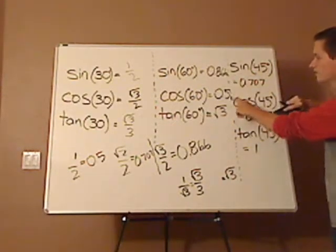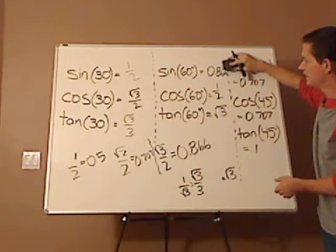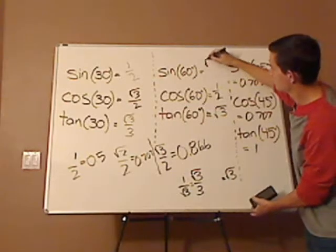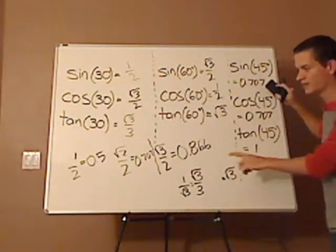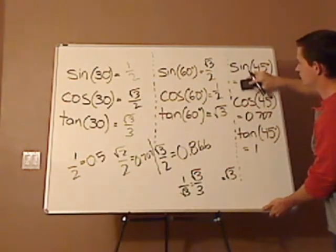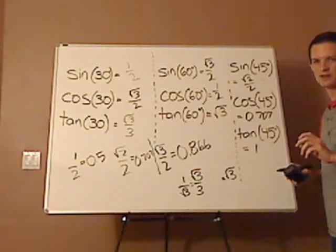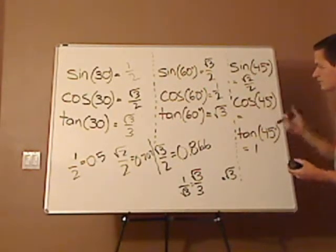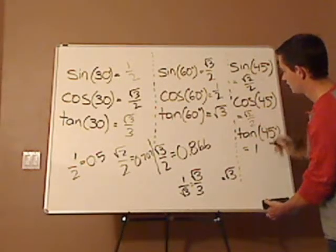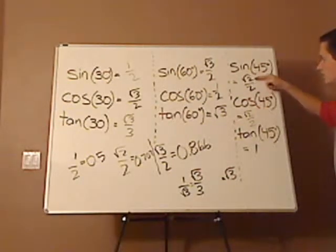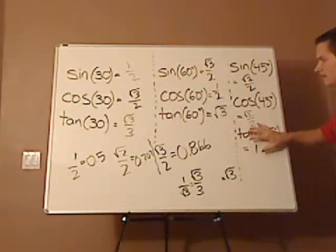Now just substitute the rest. 0.866 is square root of 3 over 2. 0.707, which one is that? It's square root of 2 over 2. Cosine of 45 degrees is the same, square root of 2 over 2. And notice tangent is just sine over cosine. So you have square root of 2 over 2 over square root of 2 over 2, which gives you 1.